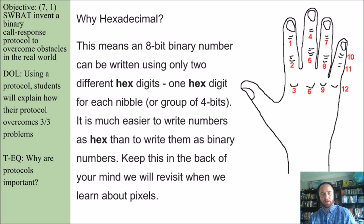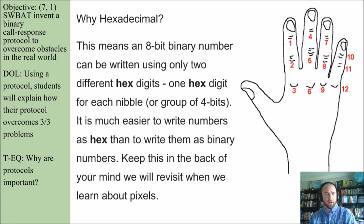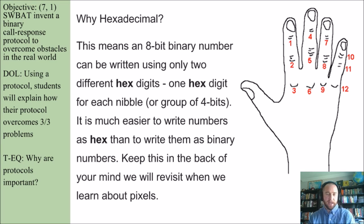Just so you know, there are a lot of different number systems that mankind can use for a variety of purposes. Hexadecimal is going to be one of them. I just want to briefly talk about that, but then we'll delve deeper into hexadecimal later on in the course. Hexadecimal means an 8-bit binary number can be written using only two different hex digits. The purpose behind hexadecimal is so we can represent binary even better, at least in computer terms. That's why we use hexadecimal.